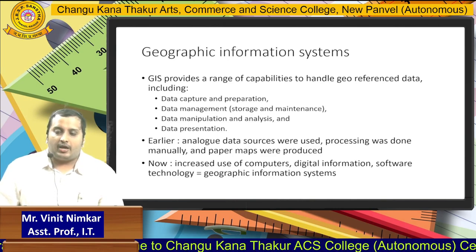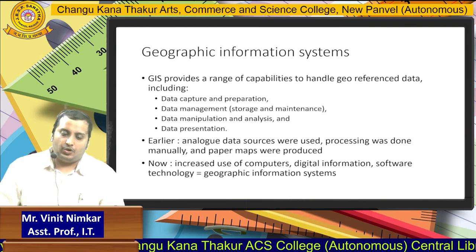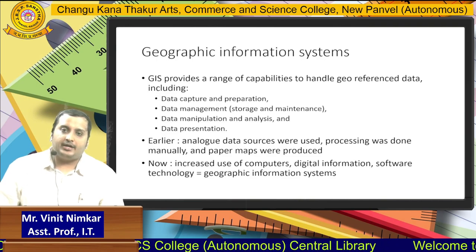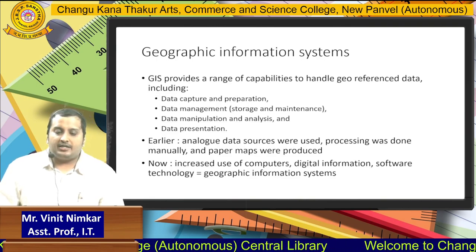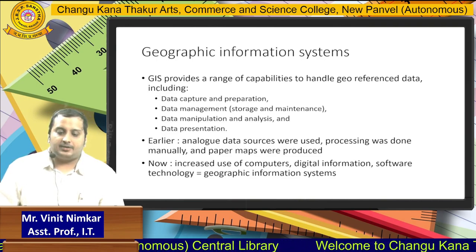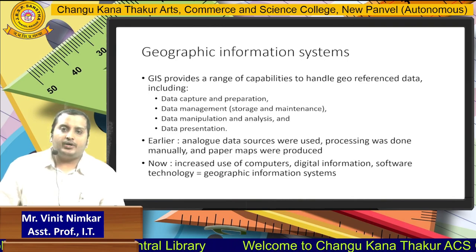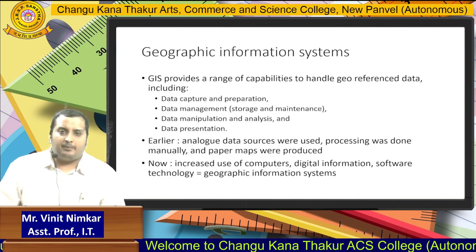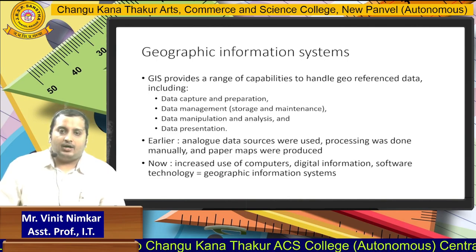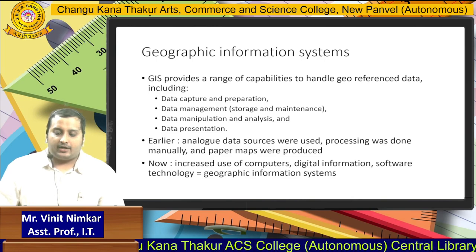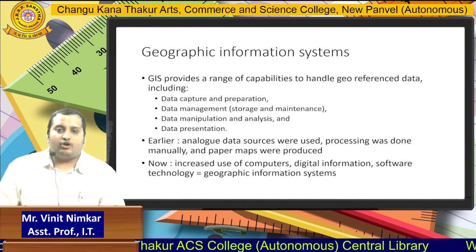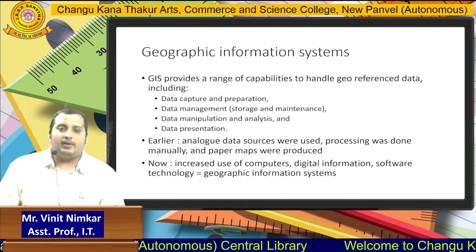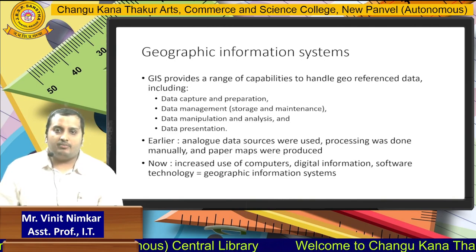Geographic information systems provides us with a range of capabilities to handle geo-referenced data, such as data capture and preparation, data management, data manipulation, and data presentation. Earlier we used to acquire this geo-referenced data from analog sources such as paper maps. But nowadays, with improvements in technology, all this information can be available in digital format using software technologies, which is normally called geographic information systems.